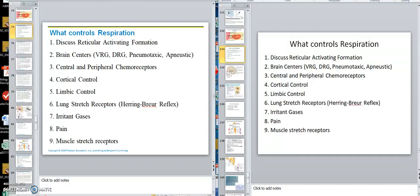What we will discuss is the reticular activating formation, brain centers which are nuclei, central and peripheral chemoreceptors, cortical control, limbic, stretch receptors, the Hering-Breuer reflex, irritant gases, pain, and muscle stretch receptors. So all of these can have some influence on controlling your breathing.